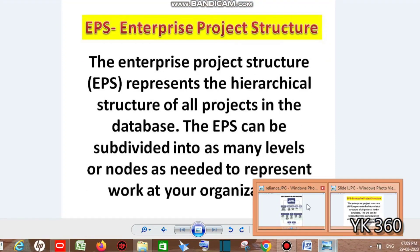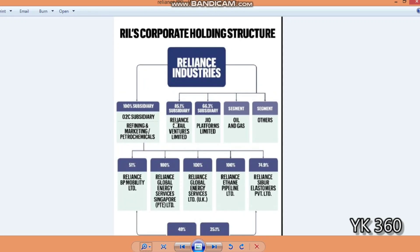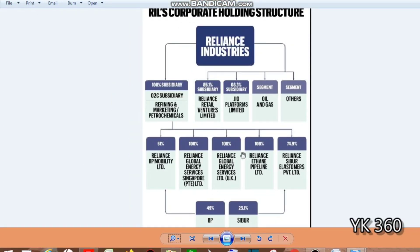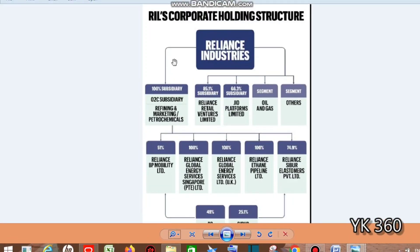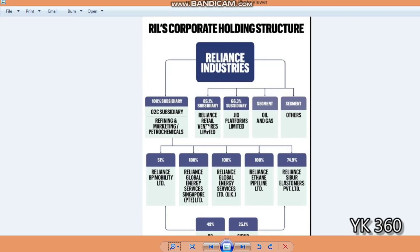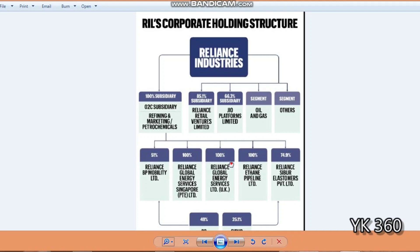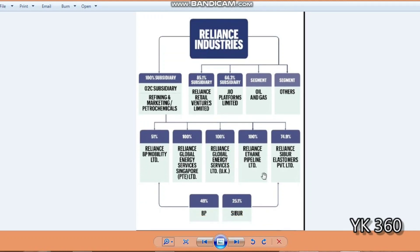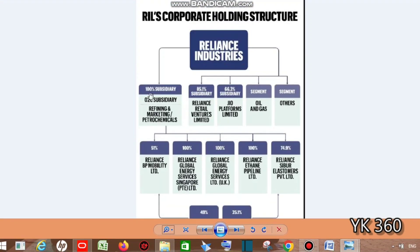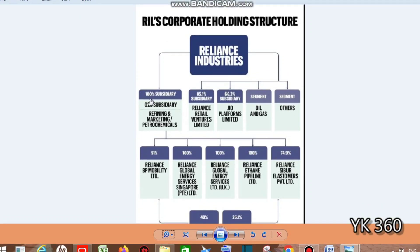Let's look at an example using a Reliance Corporation holding structure. Everything in this chart is an EPS. The major EPS is Reliance Industries, and under this EPS there are minor EPS nodes. Under each minor EPS, it is further divided into smaller categories. If you need more, you can create additional EPS under these categories.